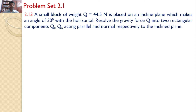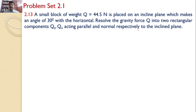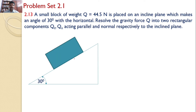In this tutorial, we will solve problem set 2.1, problem number 2.13. A small block of weight Q equal to 44.5 N is placed on an inclined plane which makes an angle of 30 degrees with the horizontal. A block of weight Q is placed on this inclined plane and the weight Q is 44.5 N.